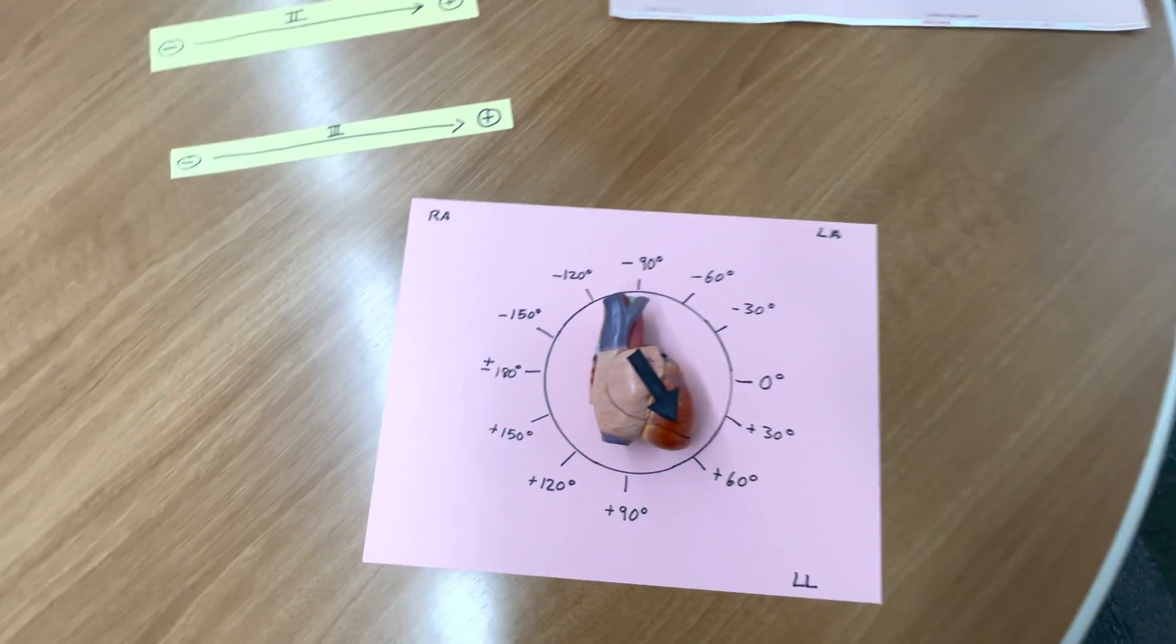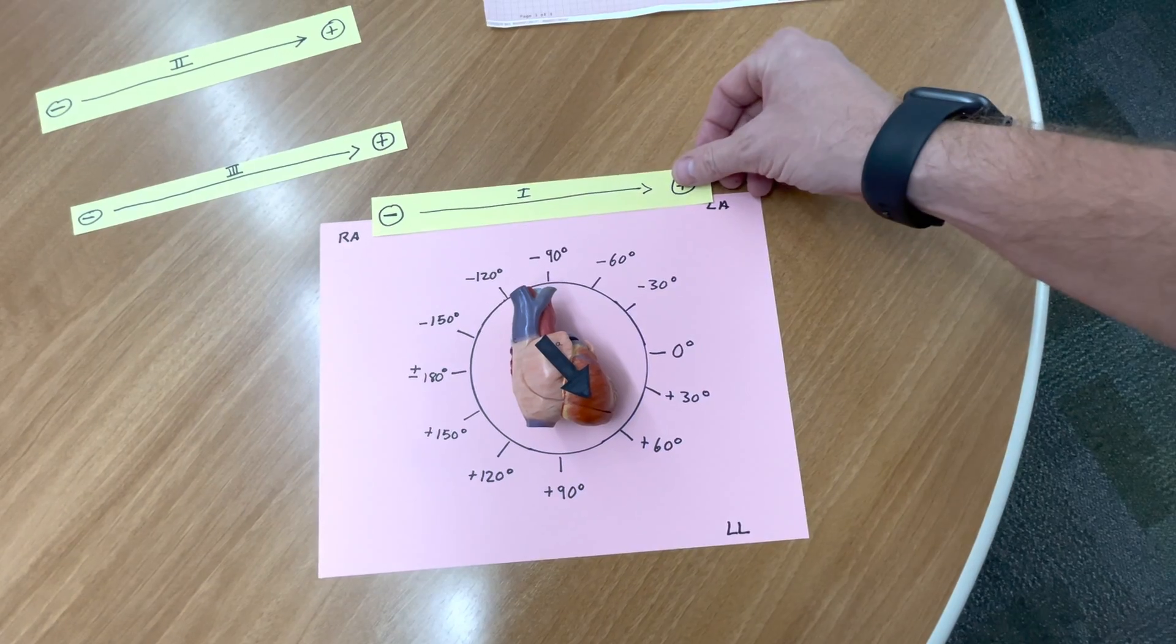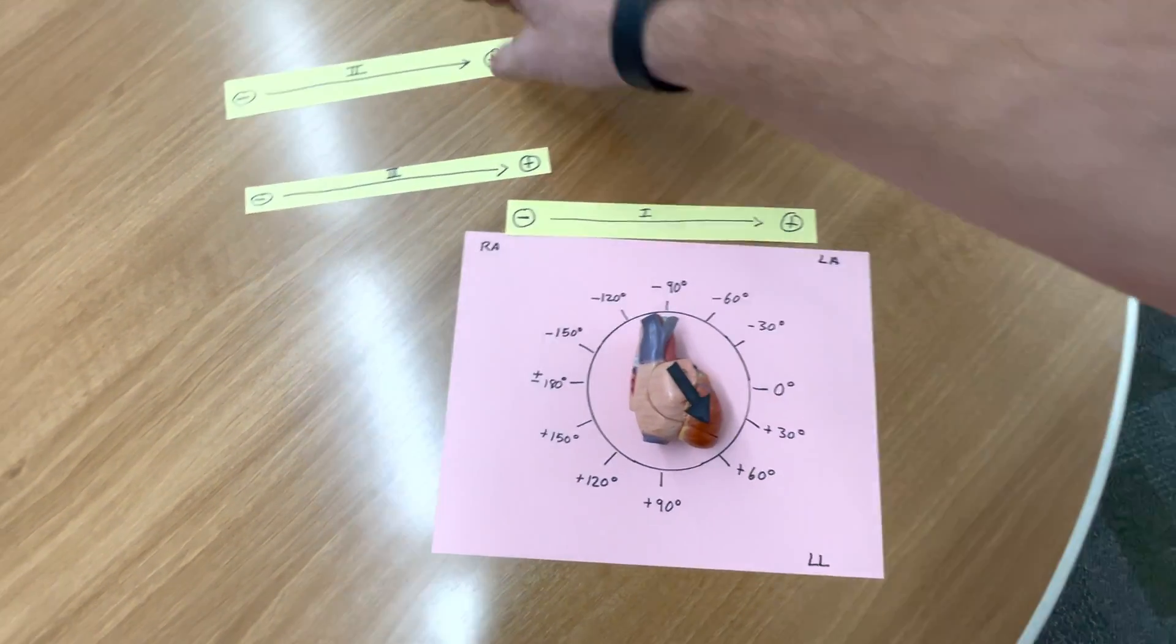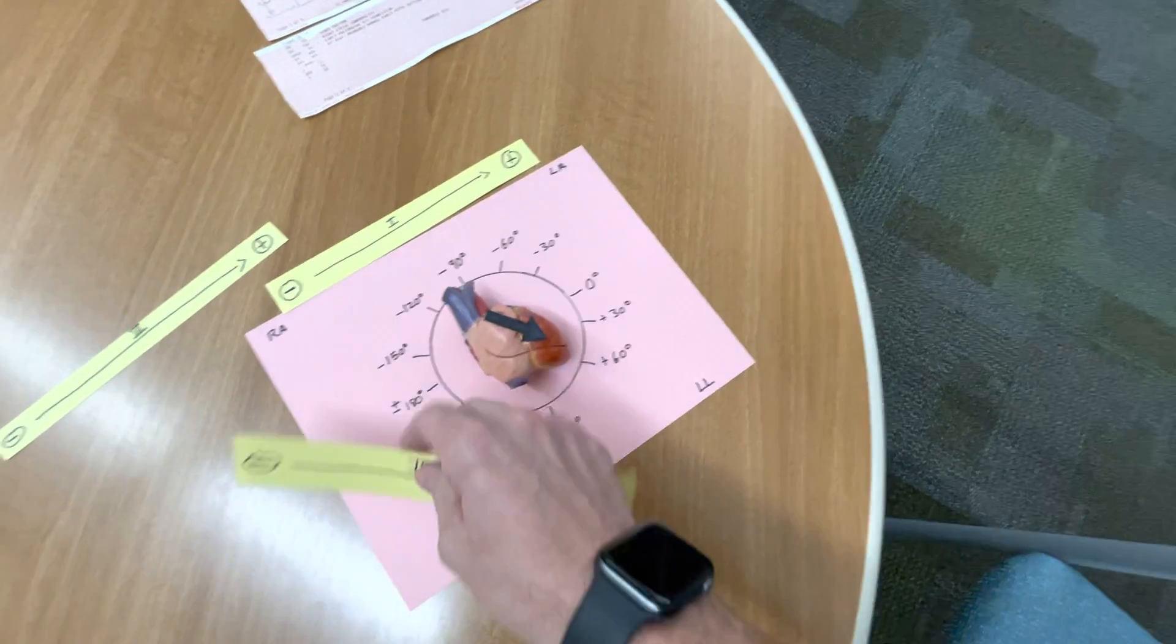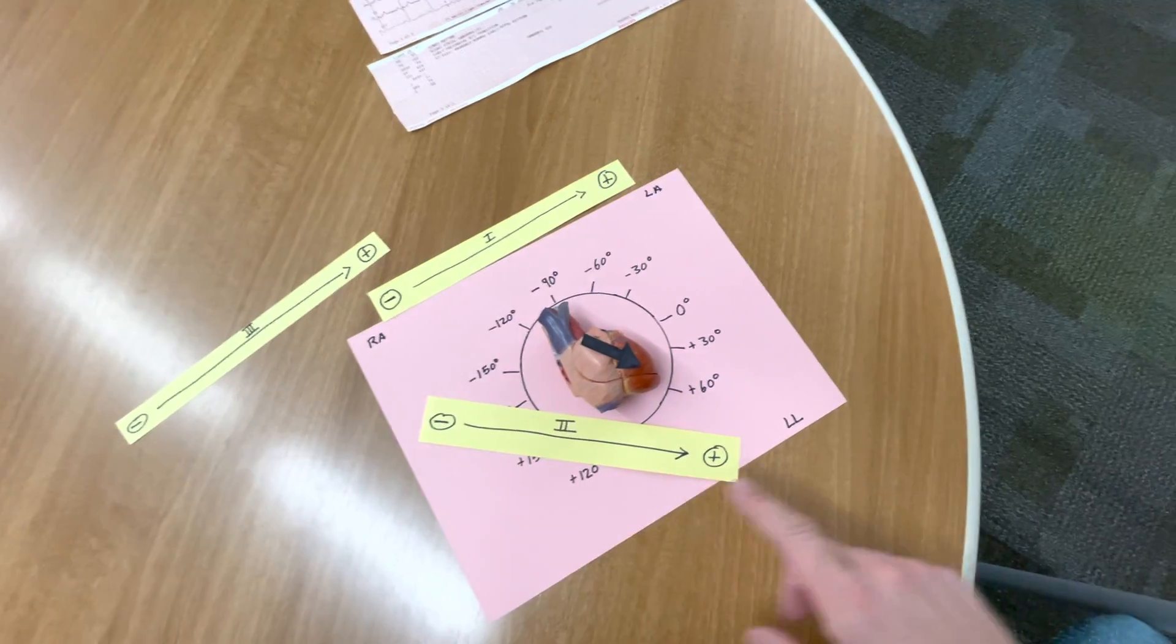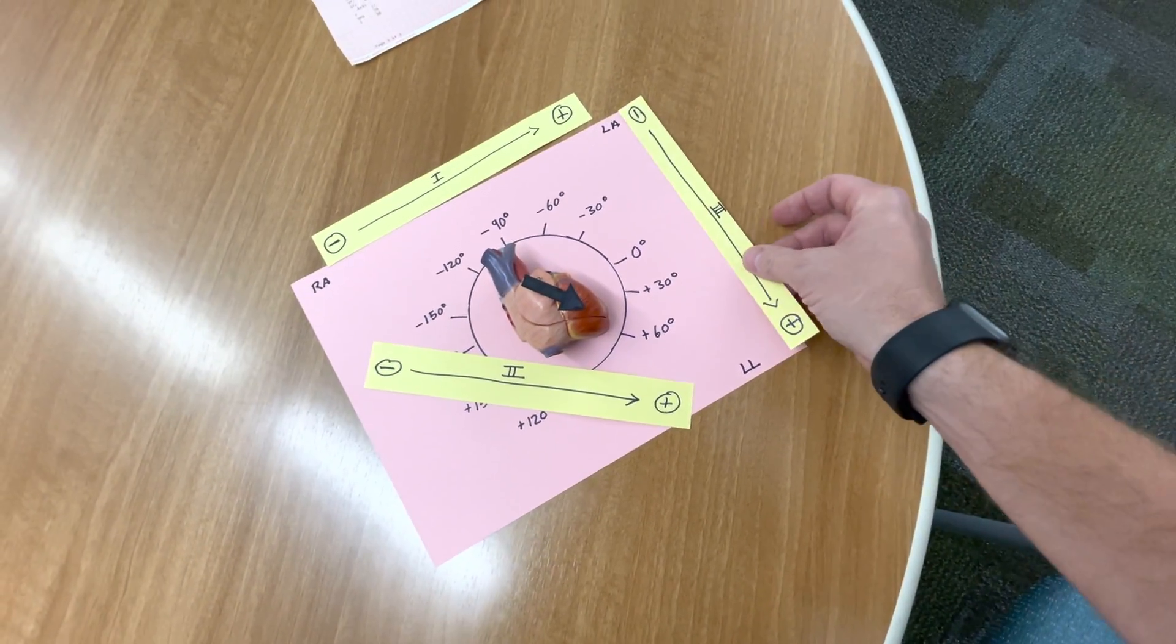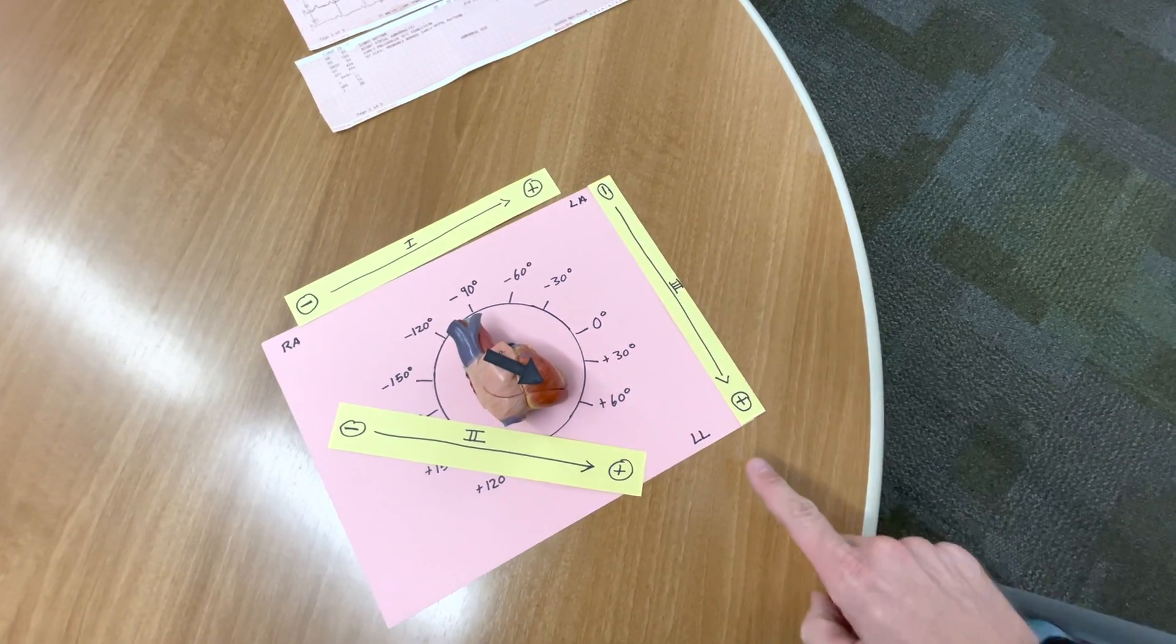If we take a look at lead 1, so lead 1 is in this direction. The RA is a negative electrode, and LA becomes the positive electrode. And then lead 2 looks from RA to LL. So, RA is negative, and LL is a positive electrode. And then lead 3 looks from LA to LL. So, LA, in this case, is a negative electrode. LL is positive.